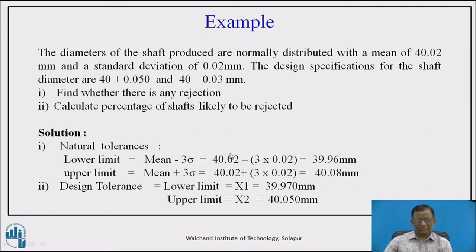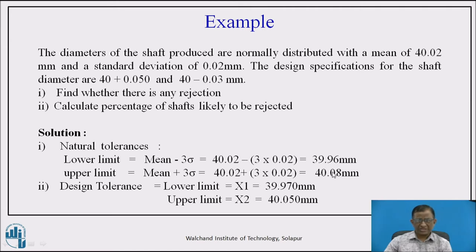To solve this, we first calculate the natural tolerance limits. The natural tolerance follows a normal distribution curve, so the lower limit is mean minus 3 sigma, which equals 39.96 mm, and the upper limit is mean plus 3 sigma, which equals 40.08 mm. So for natural tolerance, we establish upper and lower dimension limits within which all manufactured shafts will vary.